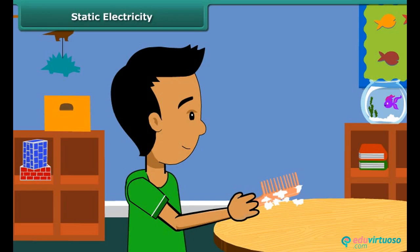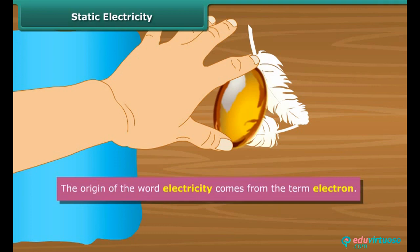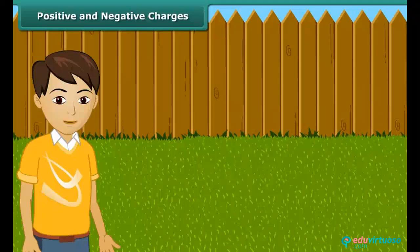This was first noticed by a Greek man named Thales over 2,500 years ago. Thales found that amber attracted tiny feathers after it was rubbed with silk cloth. This was due to static electricity. The origin of the word electricity comes from the term electron.